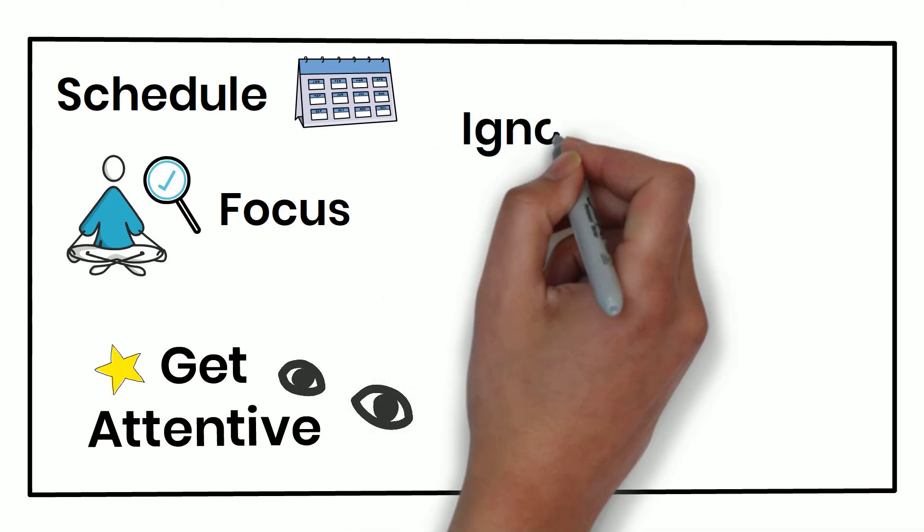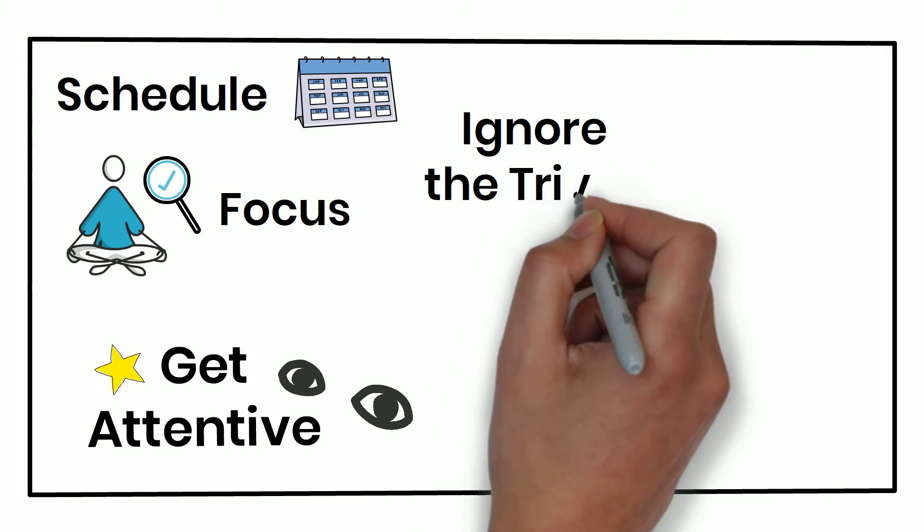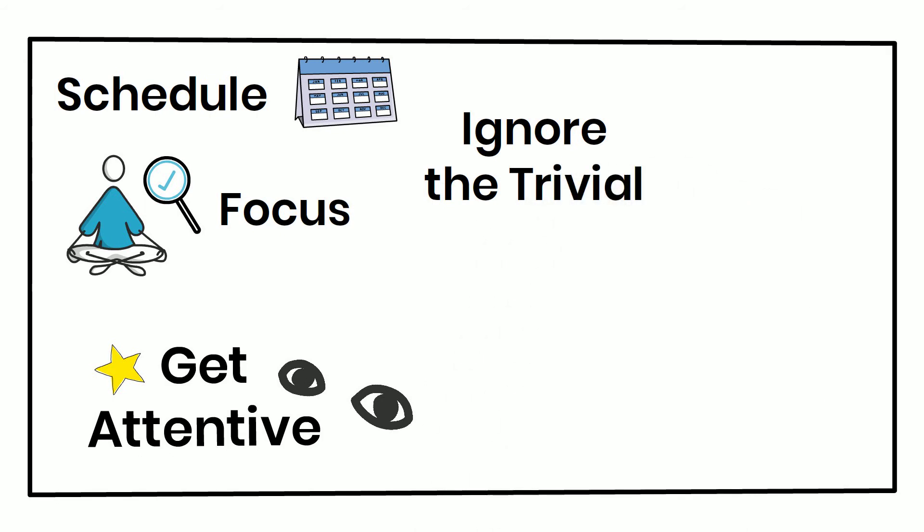Number 4, ignore the trivial. We must ignore all the things that are of less importance which show up in our way. Basically the distractions that we encounter on our path, which are not at all related to what we are doing.